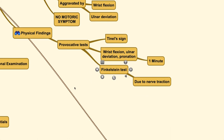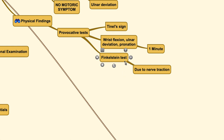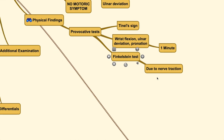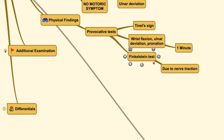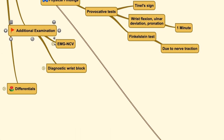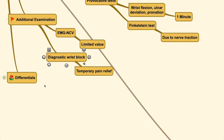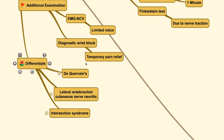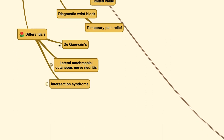You could also find a positive Tinel's sign test, although this test is not specific to this condition. It may also give a positive result because during this test, the nerve is being pulled, and due to nerve traction, the symptoms are elicited. For additional examination, EMG-NCV holds limited value here, and a diagnostic nerve block may show temporary pain relief.